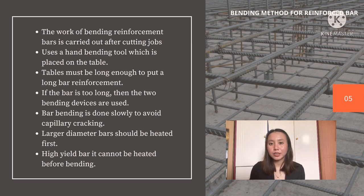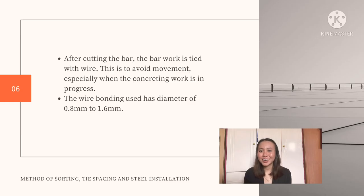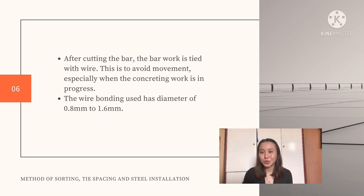However, a high yield reinforcement bar cannot be heated at all. After the cutting and bending process of the reinforced concrete bar, the bar work will then be tied with wires. This is to avoid movement especially when concreting work is in progress. The wire bonding used has a diameter of 0.8 mm to 1.6 mm.